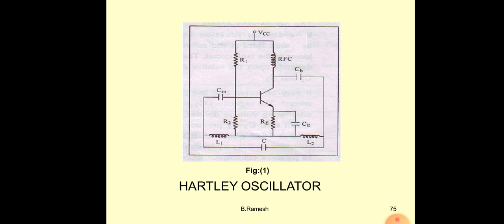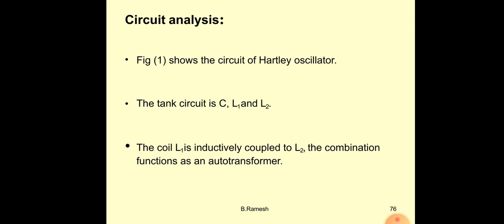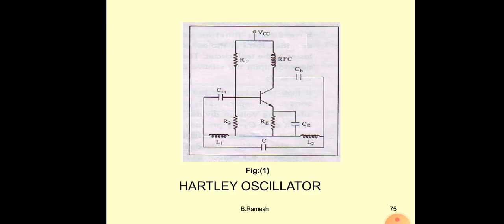An NPN transistor is used. The positive VCC is given to the base region, which has a P region, so it charges positively. The negative terminal is connected to the emitter, which has an N region, making the emitter-base junction forward biased. Connecting the collector to the positive terminal makes it reverse biased, and now your transistor is acting as an amplifier.